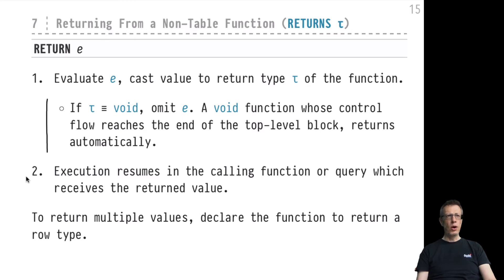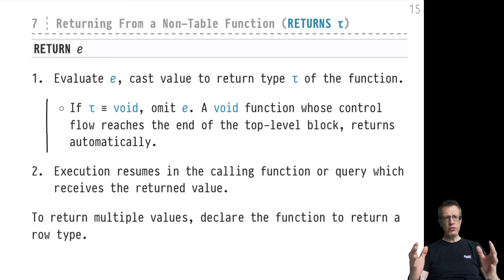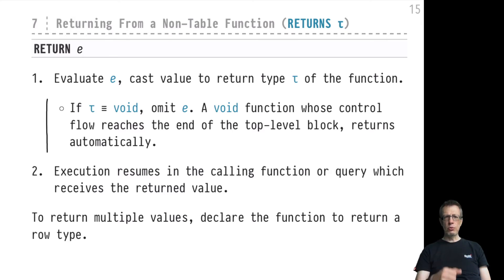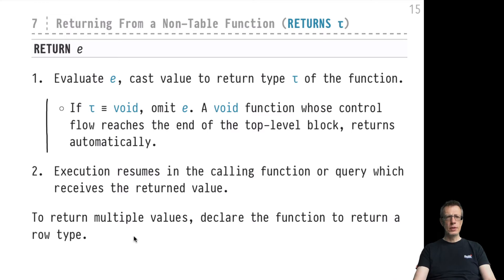If you would like to return multiple values in a non-tabular function, it makes sense to declare the return type tau as a row type, which can have many fields. The N fields of this row type can be used to return N values from your non-tabular function. That covers the non-table function case.